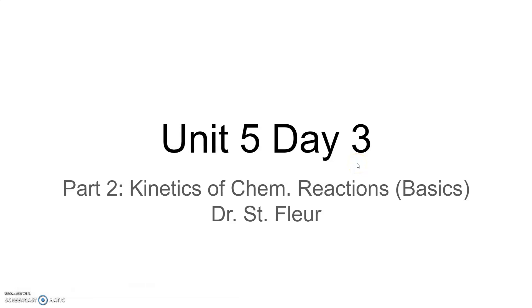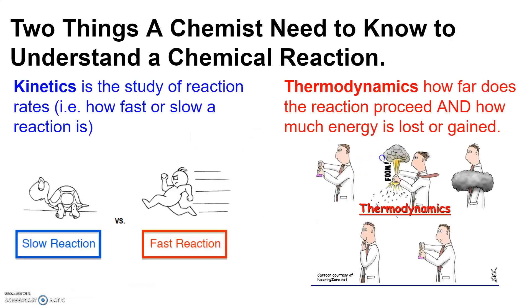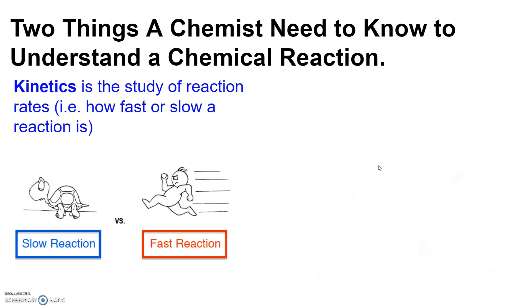Welcome to Unit 5, Day 3, Part 2: Kinetics of Chemical Reaction — the Basics. As mentioned in Part 1, there are two things a chemist needs to know to understand a chemical reaction. In Part 1, we focused on thermodynamics, which describes the energy lost or gained during a chemical reaction. In this topic, we're going to focus on kinetics, which is the study of reaction rates — how fast or slow a reaction is.